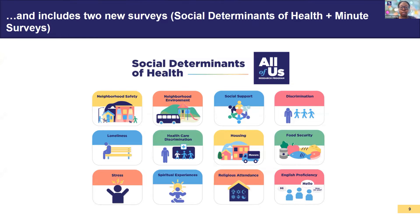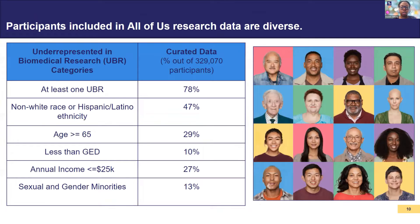We also have COVID vaccination experience surveys. As for how diverse our data are: 78% come from at least one category of underrepresented in biomedical research, 47% are non-white or Hispanic/Latino ethnicity, 29% are 65 years or older, 10% have less than a GED, 27% have annual income of $25,000 or less, and 13% are sexual and gender minorities.